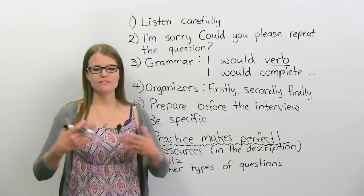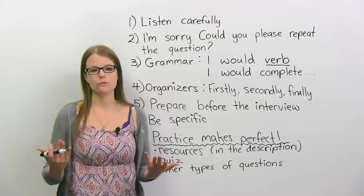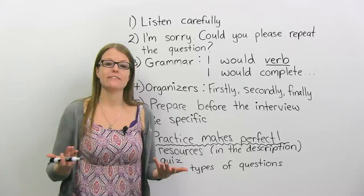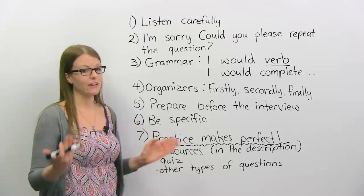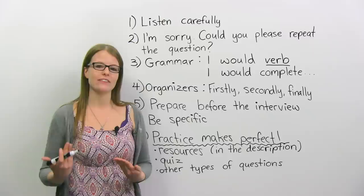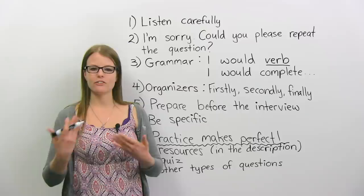Be specific — they want to know specifically what you would do. Think carefully and then say something specific. How would you deal with a co-worker who wasn't nice to customers? How would you deal with a boss who was very difficult? Give details. And tip number seven: practice makes perfect. When you first start doing situational interview questions, they can be very difficult — but the more you practice, the easier they get. You start to notice a pattern and they become a lot less scary. So practice, practice, practice.